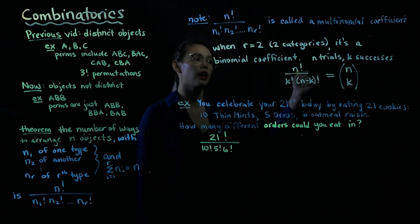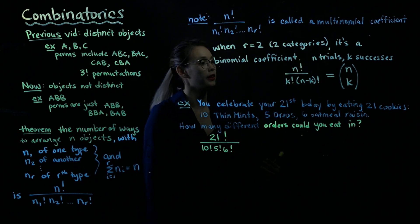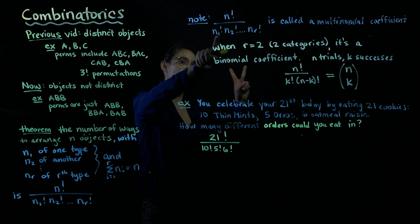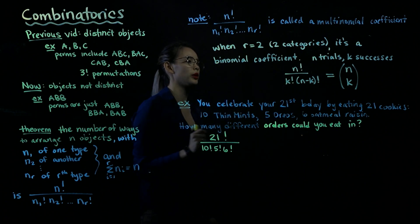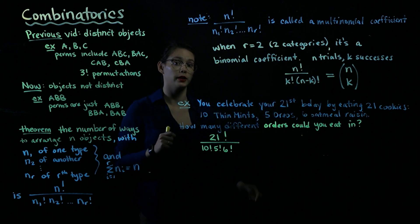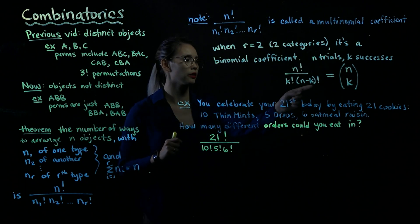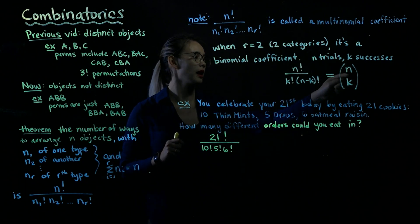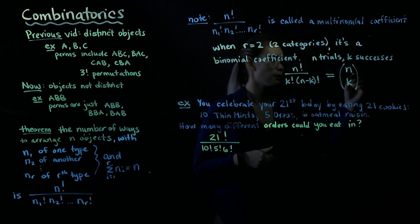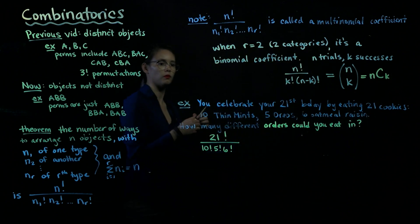And we can actually write that like this. So if we just have two categories, then we could say we have n trials, and then k successes, and that would mean n minus k failures. So then we would write this multinomial coefficient in the two category case as n factorial over the number of successes factorial times the number of failures factorial. And we can write that in a shortcut way as n choose k, like that. Sometimes you also see it like this.